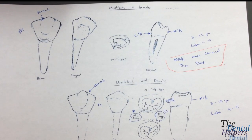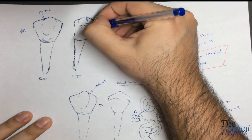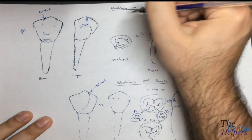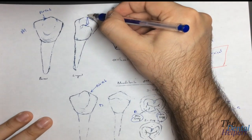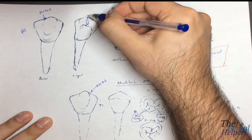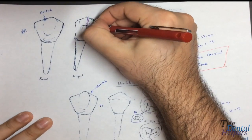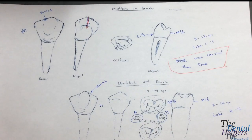This mesial marginal ridge being more cervical is a common test question because it's very unique to the mandibular first premolar. In your other premolars, it's the exact opposite — the distal marginal ridge is more cervical than the mesial marginal ridge. Also, we have two triangular ridges in the mandibular first premolar, and anytime you have two triangular ridges, that automatically means you're going to have a transverse ridge, as long as those two ridges cross each other.